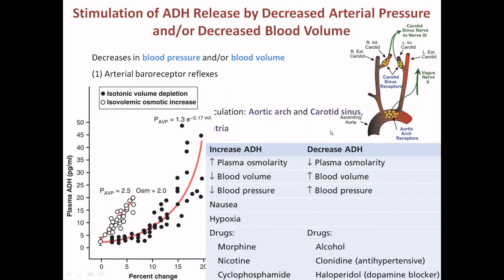Next is decreased ADH. Plasma osmolarity will decrease — the opposite scenario. Blood volume and blood pressure will increase. Drugs like alcohol, clonidine, and haloperidol are associated with this. When this type of scenario occurs, the person urinates more.